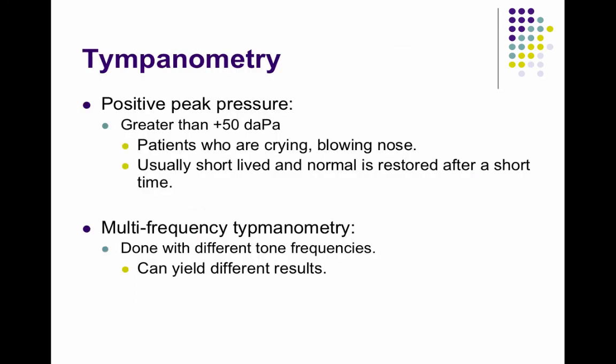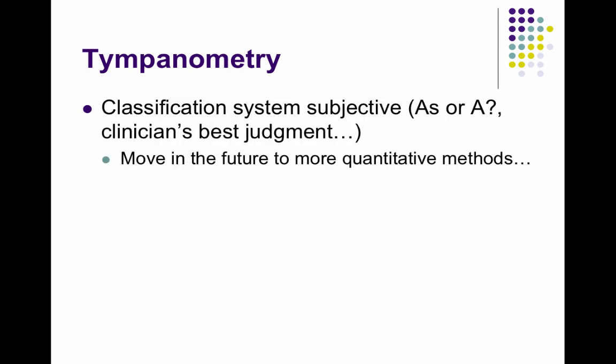A positive peak pressure occurs when you get a tympanogram with a peak greater than 50 deca-pascals — seen in patients who are crying or blowing their nose, and it's usually short-lived. There's also multi-frequency tympanometry, which uses different tone frequencies beyond just 226 hertz — something you'd learn more about as an audiologist. We have this subjective system for naming tympanograms, but it's common and it's what's done clinically.